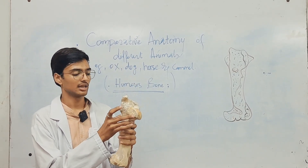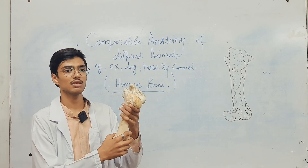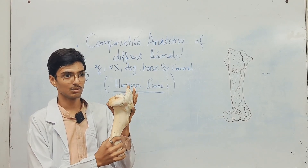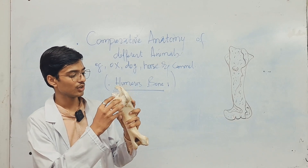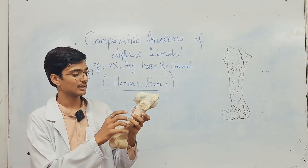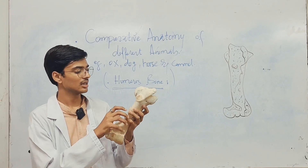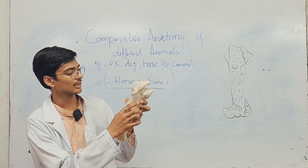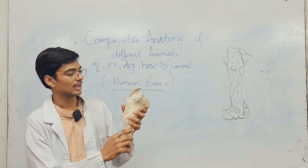Let's discuss the proximal extremity. The proximal extremity is a very voluminous part of the humerus. As you can see, it is composed of the humeral head, tubercles, a neck of humerus, the crest of the humeral neck, and the crest of the greater tubercles.